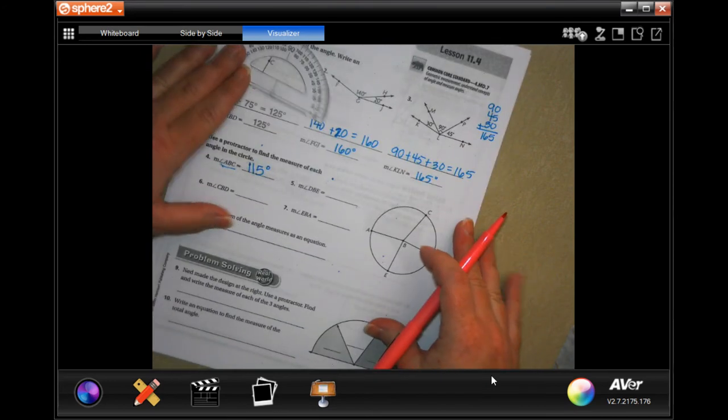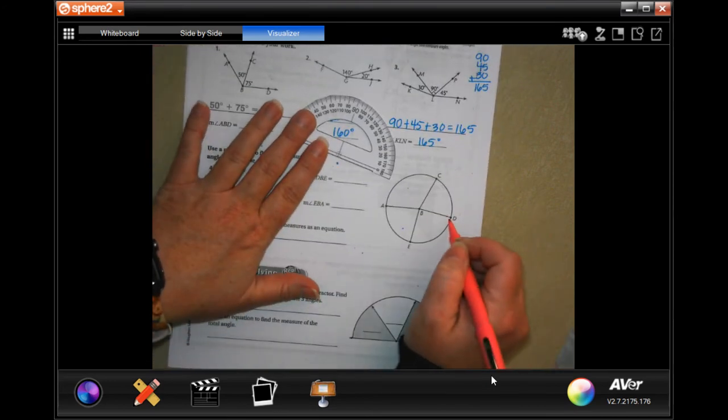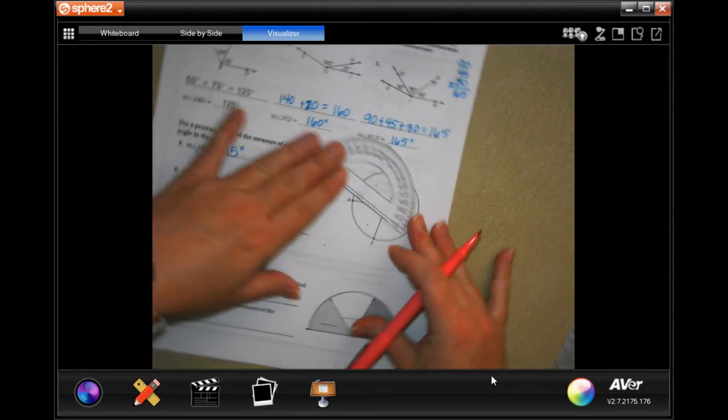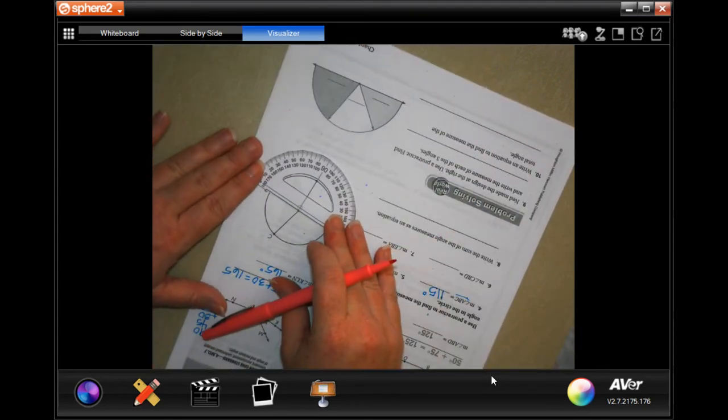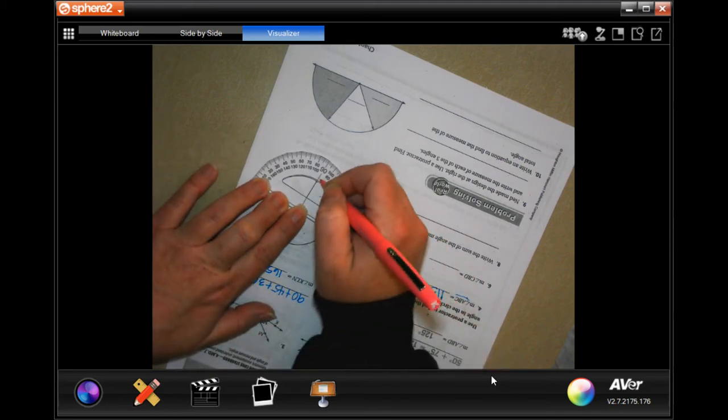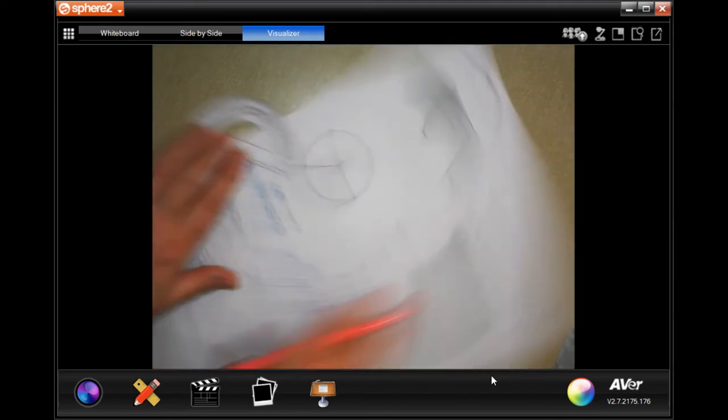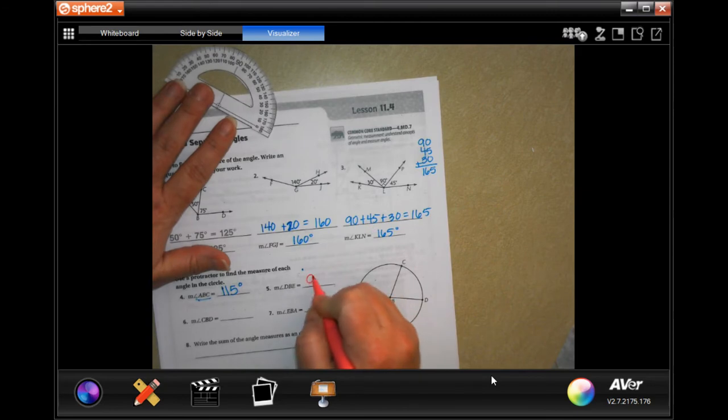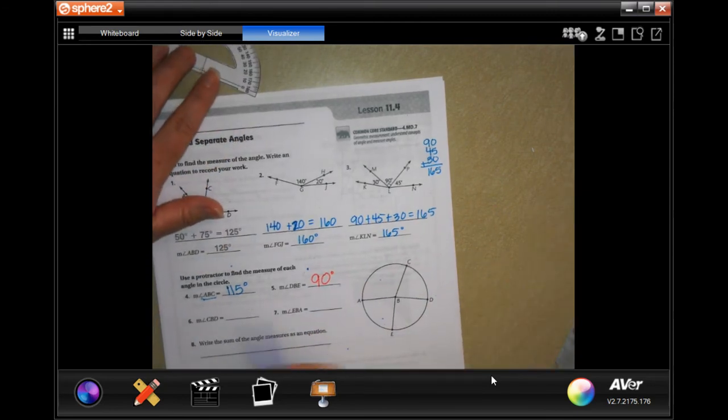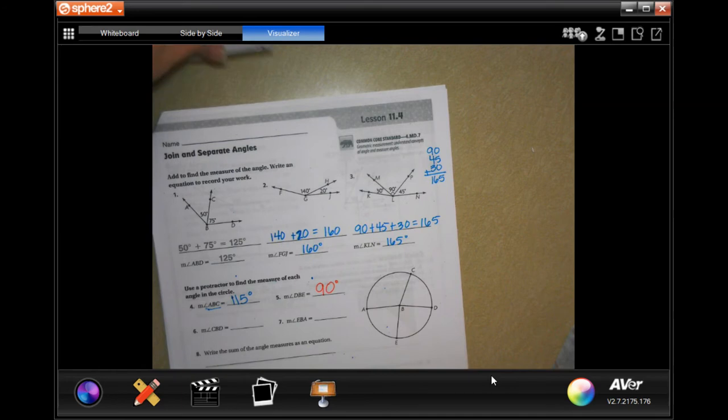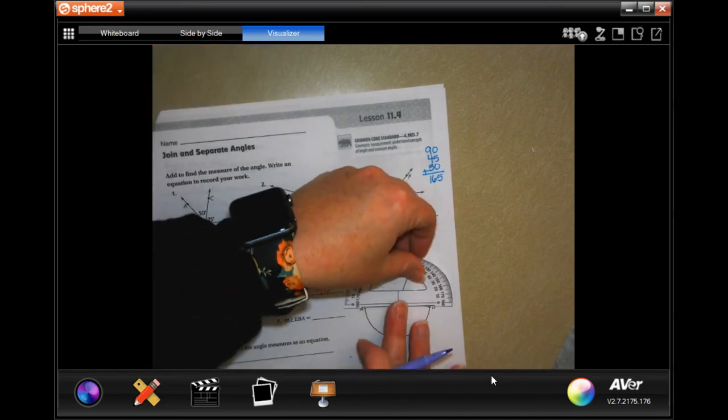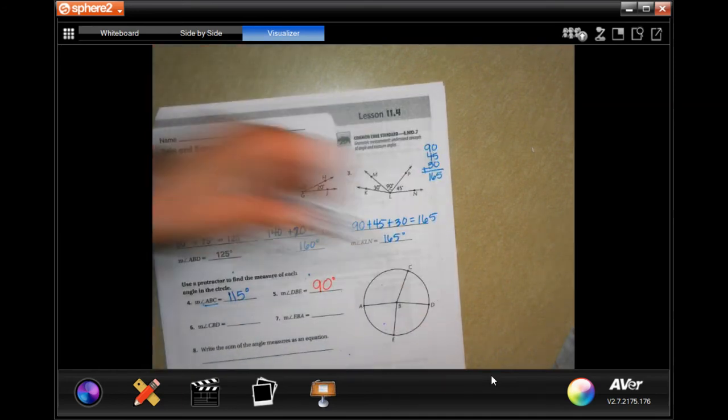So my bad, we're on this one. On the other one, we're going to use the inside numbers on this one. And then we're using the outside numbers. Sorry guys. So it's going to be right there at 115. 1, 1, 5. And don't forget your degrees. Number five says D, B, E. So now we're going to do D, B, E. I'm going to turn it. And we're going to put our protractor. And that's right at 90 degrees.